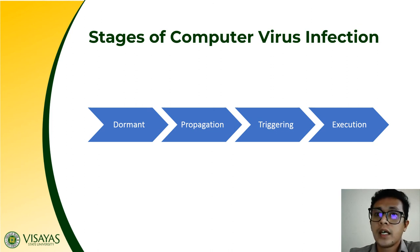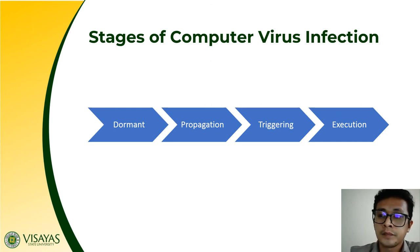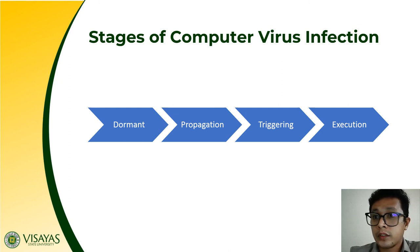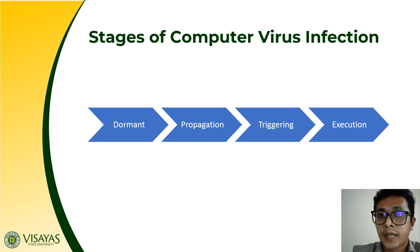The stages of computer virus infection start with dormancy — sleeping for a period of time — then it starts to propagate and infects programs and files. Once infected, when you open the file or program, it now gets executed and triggers the instructions of the virus. Its damages can range from simple to complex problems in your system.